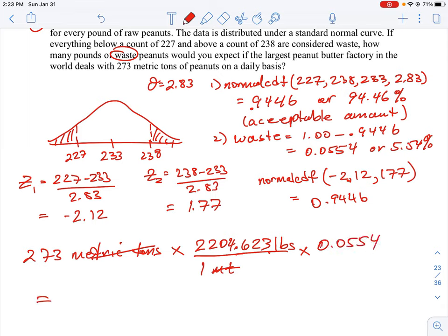If we work that out completely, you will get somewhere around 33,411 pounds. Now, it just depends how many decimals you carry this to - that's the one given in the key. If we do 273 times 2,204.623 times 0.0554, I get actually 33,343 pounds.